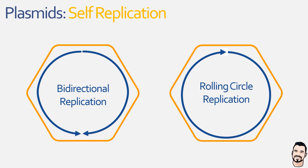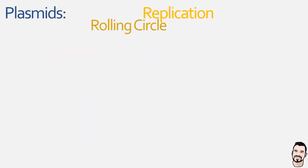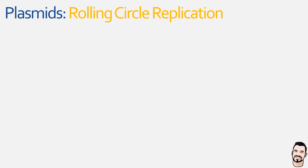Before moving on to the actual process of rolling circle replication, it's very important to remember that whilst there may be some similarities between plasmid replication and chromosome replication in terms of components and terminology used, they are very distinct processes — so be sure not to get them mixed up. Here is an animation that breaks down rolling circle replication into its most basic form.